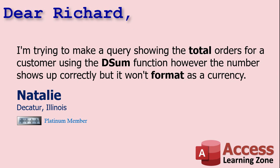Today's question comes from Natalie in Decatur, Illinois, one of my Platinum members. I've seen this question pop up in my forums and in the comments section a dozen times in the past month or two, so it's quite a popular question. Natalie says she's trying to make a query showing the total orders for a customer using the DSUM function — the number shows up correctly but it won't format as a currency. This problem tends to show up when you use aggregate functions like DSUM, DLOOKUP, or a form footer total that uses a SUM function.